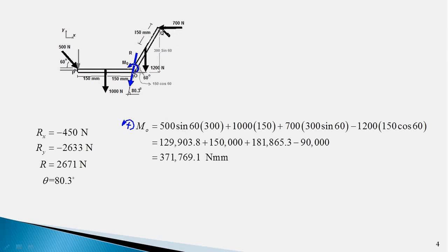The moment arm for the 700 N force is 300 sin 60, because the distance OQ is 300 mm and makes an angle of 60 degrees with the horizontal. Therefore this distance is 300 sin 60, giving the third term: 700 × 300 sin 60.